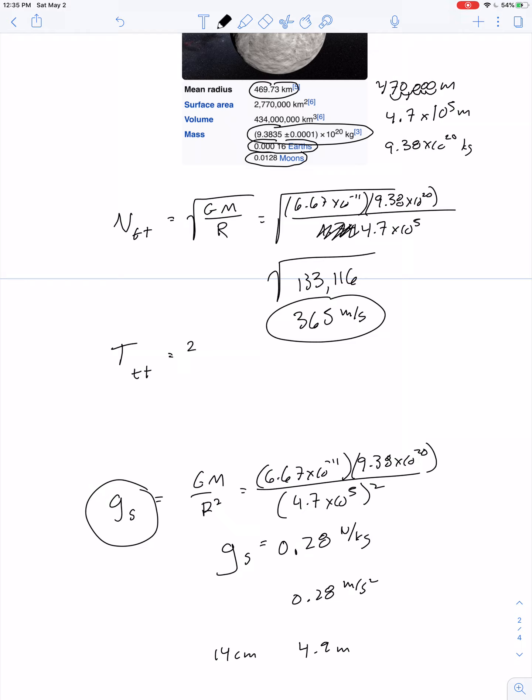Period is equal to 2 pi r over T. So, the period is equal to 2 pi r divided by the speed. 2 pi times 4.7 times 10 to the 5th divided by 365. This comes out to about 8,094 seconds, hard to relate to, so that's the same as 134 minutes, or about 2 hours and 15 minutes.